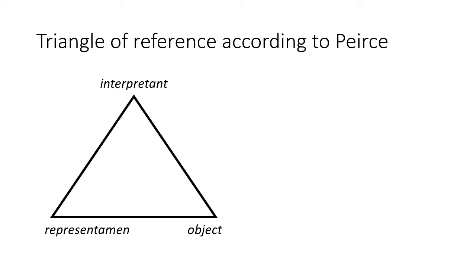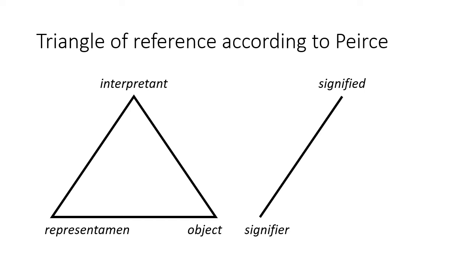I promised you a lot of triangles today. This is the triangle of reference according to Peirce. You can see that the main idea is almost Platonic — every sign has its representamen, which is a material sign, and it has a material object called the object. There is also something ideal in this diagram: the interpretant, which is somehow close to Platonic forms or ideas. Just to compare it to de Saussure's account, you can see it is a bit simplified because it has only two parts: a material sign — the signifier — and that something the sign refers to, called the signified.